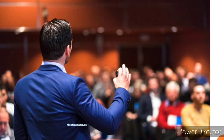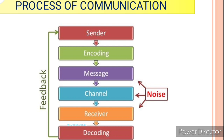We have seen what communication is, the types of communication, and important features of communication in the classroom. Now we are going to look at the process of communication. This diagram represents the process of communication among people, which occurs in seven different steps.